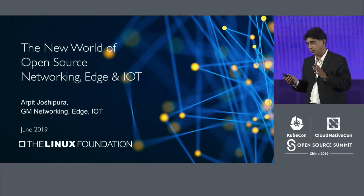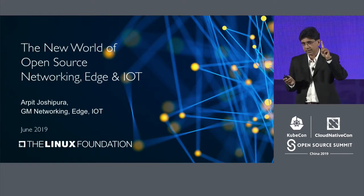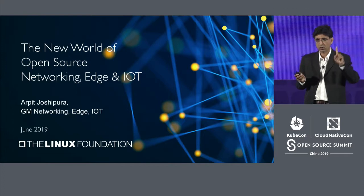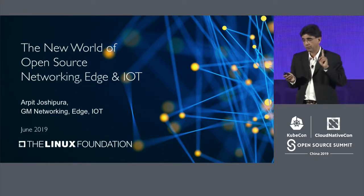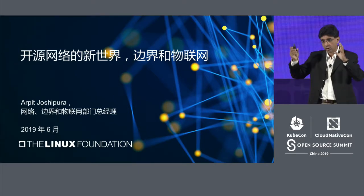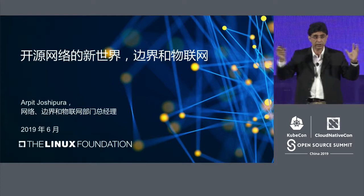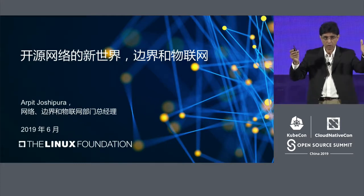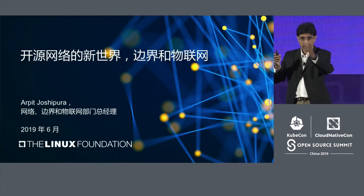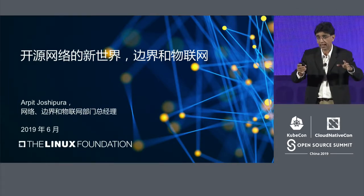This new world has three characteristics. The first one is telecom networks globally have now chosen open source to be their de facto platform. Number two, the cloud is moving to the edge, and edge is going to be unified across not just the cloud, but cloud networks, telecom, enterprise, and IoT. It's going to be a common edge, built on open source.